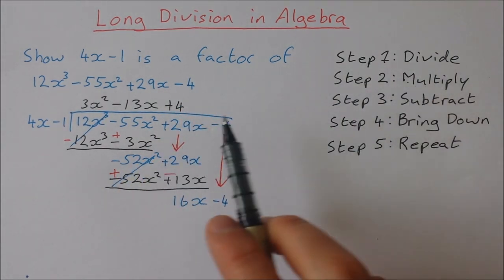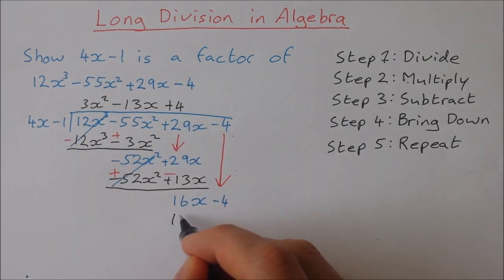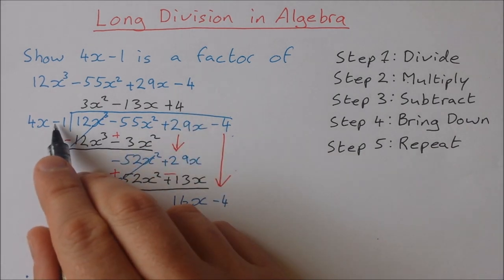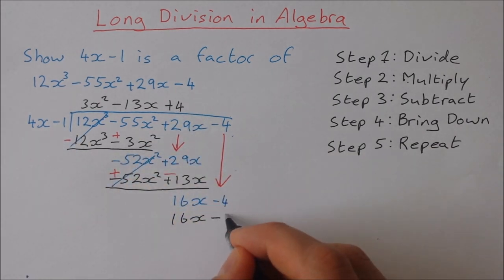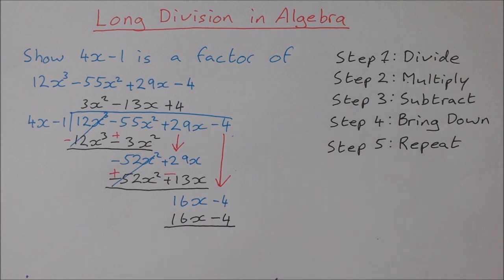Step 2 multiply. 4 multiplied by 4x is 16x. 4 multiplied by minus 1 is minus 4. Now you'll notice that I have the same terms here and here.